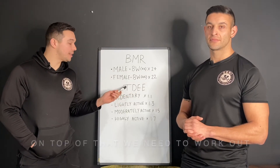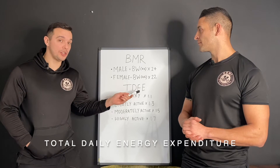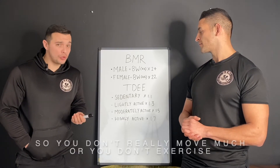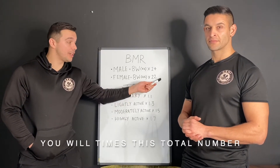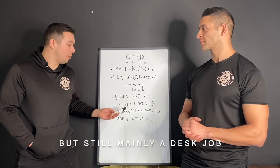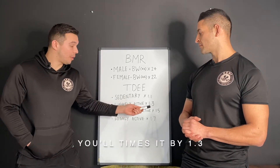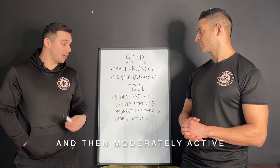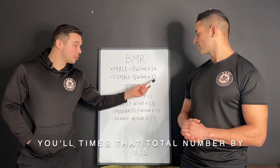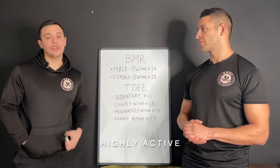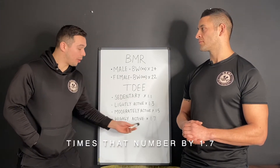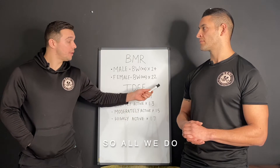On top of that we then need to work out our TDEE — total daily energy expenditure, which we covered in the last post. If you are sedentary — not very active, desk job, don't exercise much — you times this total by 1.1. Lightly active, mainly a desk job but you go to the gym once or twice a week, times it by 1.3. Moderately active, you move around quite often and go to the gym three to five times a week, times that by 1.5. Highly active, you're on your feet a lot or exercise a lot, times that number by 1.7.